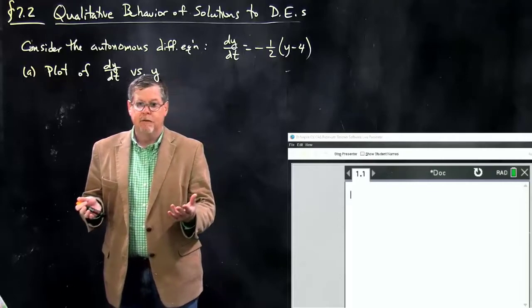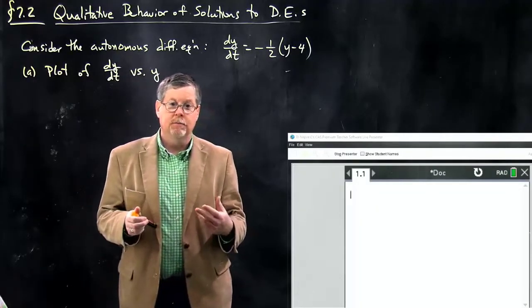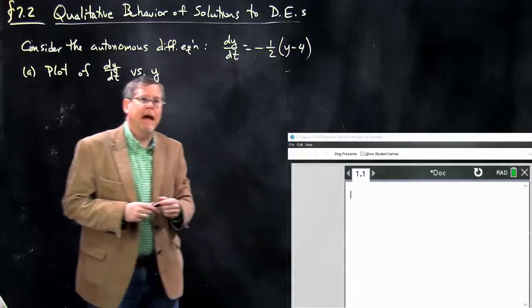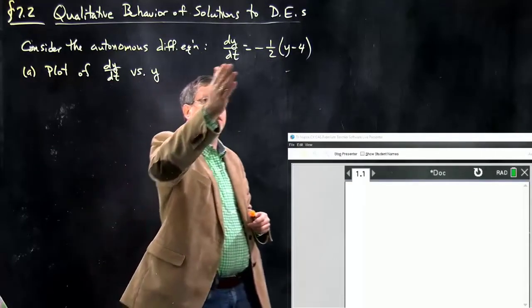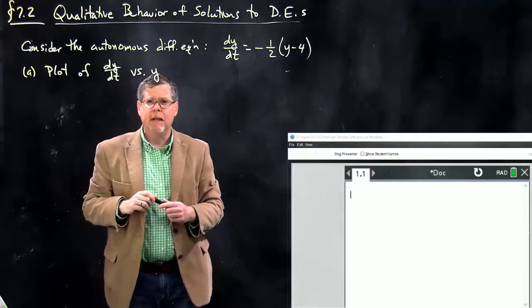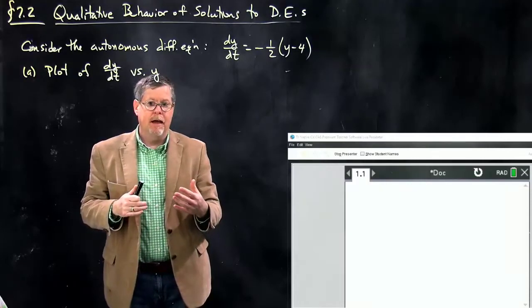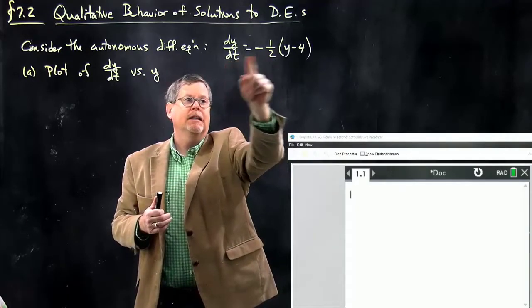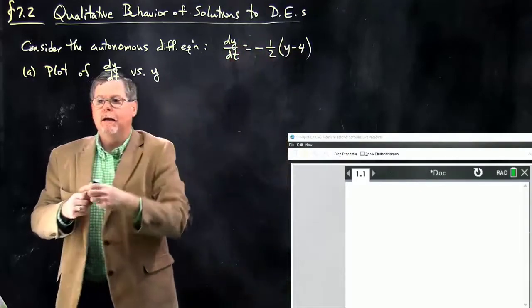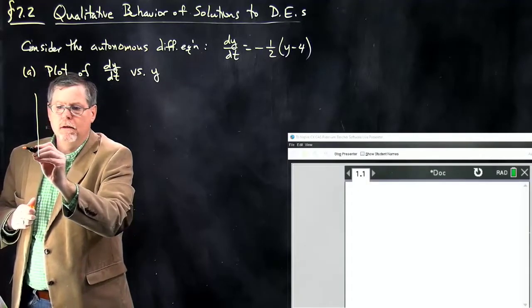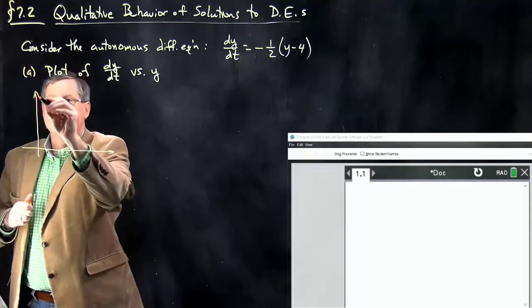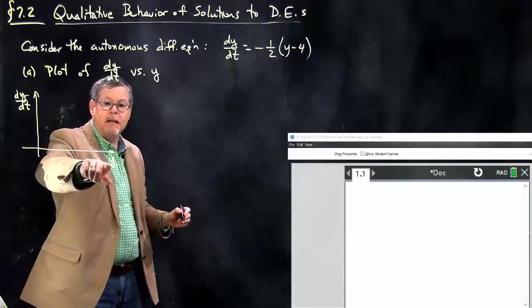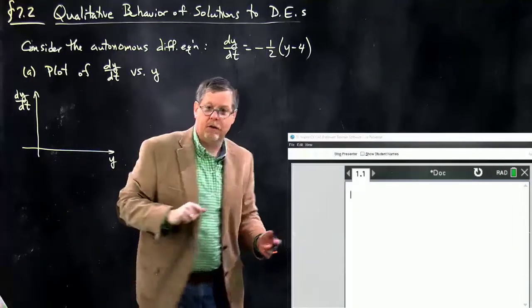Here we're going to take a look at qualitative behavior of solutions to differential equations and the relationships to what makes the original differential equation equal to zero. We're going to look at this specific differential equation: dy/dt equals negative one-half times (y minus 4). We're going to look for patterns and behaviors between the graph of this function, treating it as f(x) with x as input, and plot it on an axis where the vertical axis is dy/dt and the horizontal axis is y — the dependent variable, not the independent variable t.